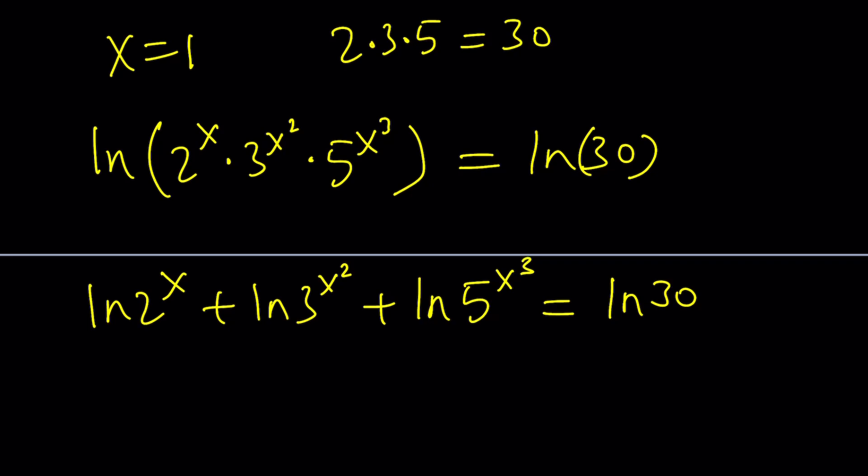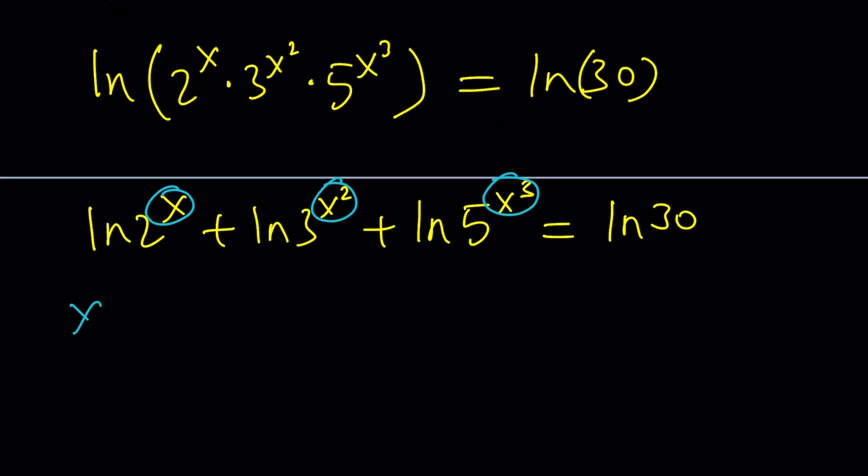Now, we can use the properties of exponents or the properties of logs. These are exponents, so we can bring them down. And write this as x times ln 2 plus x squared times ln 3 plus x cubed times ln 5 equals ln 30.